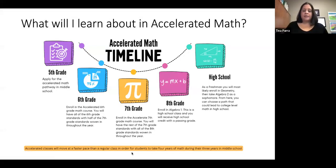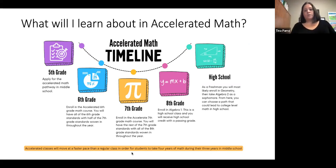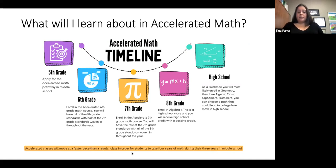In the accelerated math course in sixth grade, you will take all of the sixth grade standards and about half of the seventh grade standards, interwoven together. In seventh grade, you will take the rest of the seventh grade standards plus all of the eighth grade math content, so that when you are an eighth grader you can take Algebra 1, which is a high school class. As a middle school student you will be earning high school credit, and when you move on to high school you'll take Geometry, then Algebra 2, and from there you can choose a pathway that could lead to taking college classes and earning college credit before you graduate high school. Accelerated classes will move at a faster pace in order for you to take four years of math during your three years of middle school.